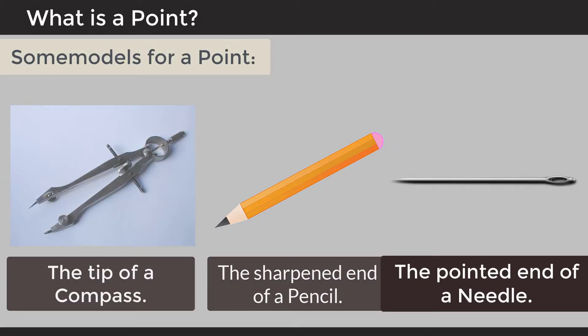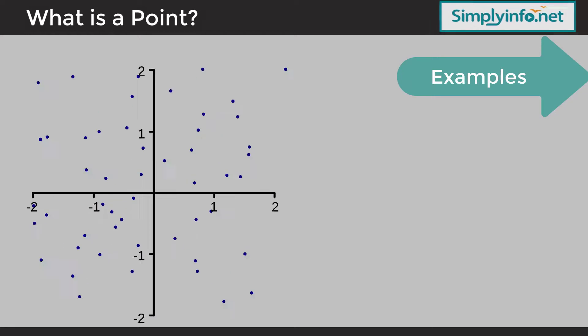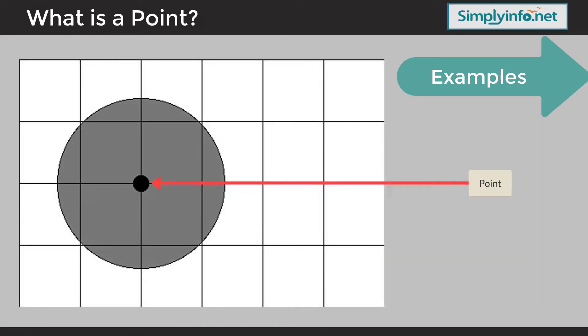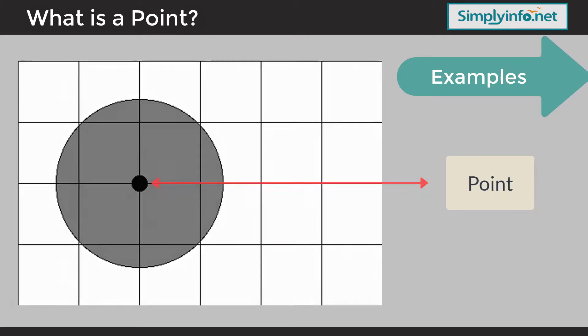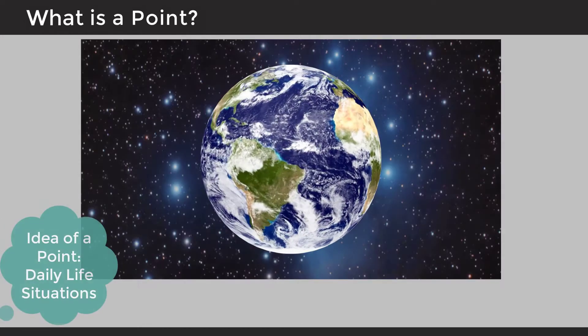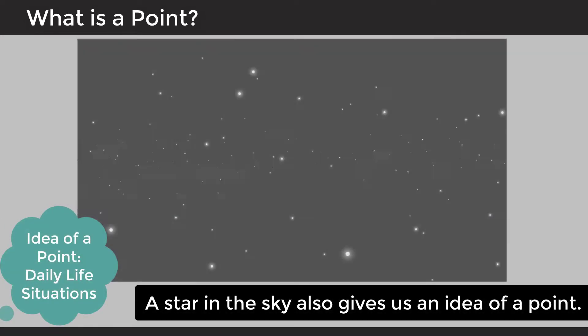Some models for a point: the tip of a compass, the sharpened end of a pencil, the pointed end of a needle.